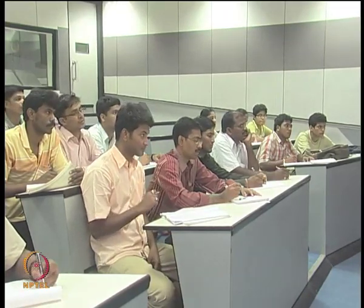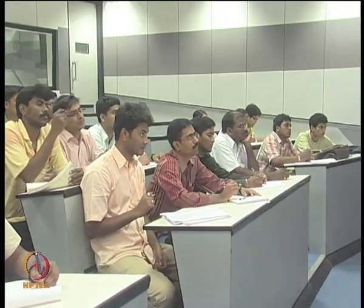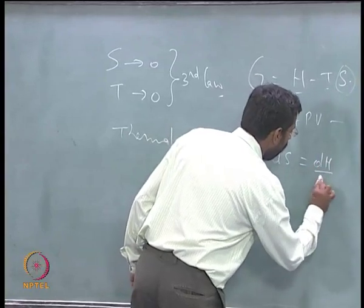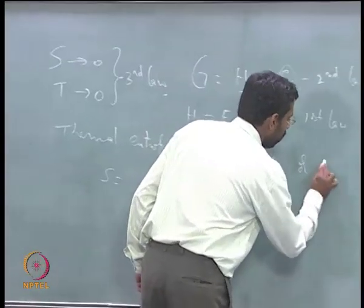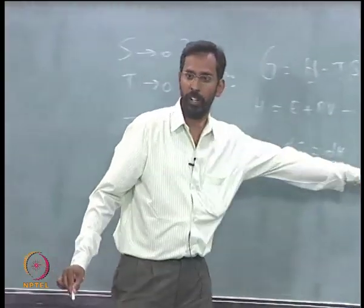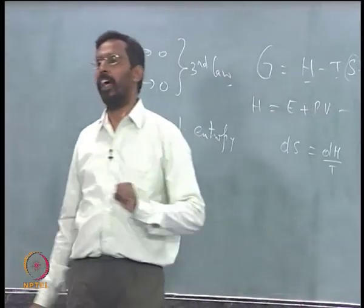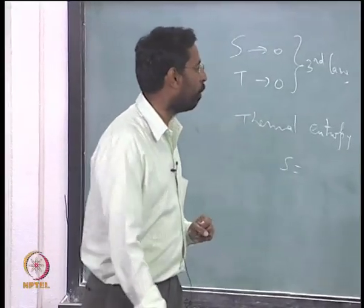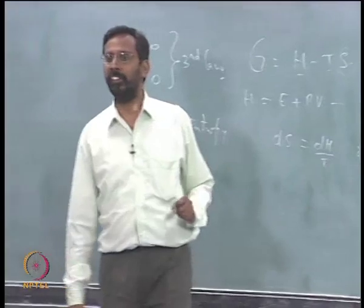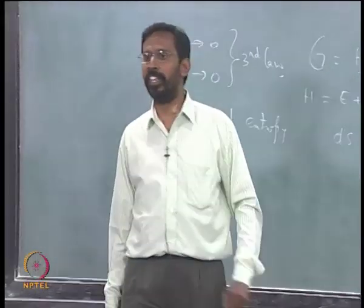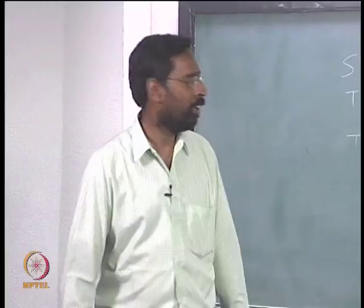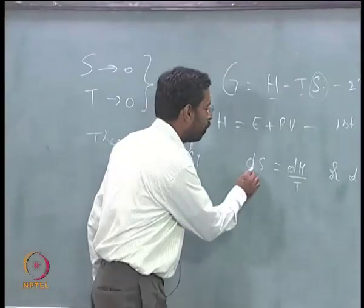In fact, if you see the second law definition of entropy is d s equal to d h by t or it also comes out as q by t. This is how people have defined the entropy. And because we know under certain conditions, under constant pressure, q can be taken as d h. So we take it as d h by t.